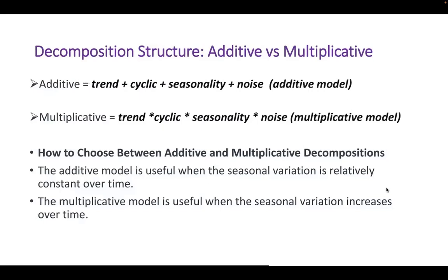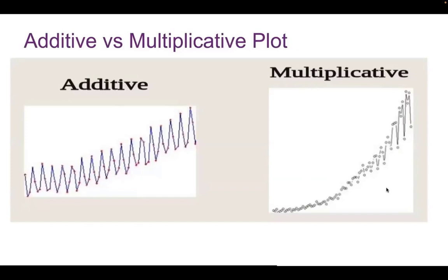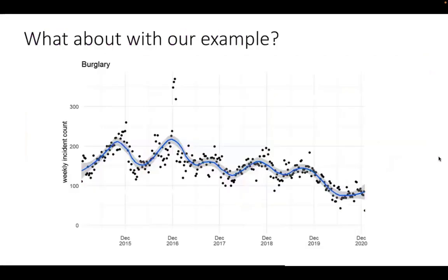Let me give you an example of what the two plots look like side by side. On the left, we have the additive plot — the time series is increasing throughout, but the amplitudes and the frequency stay the same as we increase. Then we have a multiplicative plot: if the time series has growth or decline with time, the time series can be considered multiplicative, and we have changes in amplitude or frequency over time. With our example, do you think we tend to follow more of an additive plot or more of a multiplicative plot? Take a quick look and pop your answer into Mentimeter.